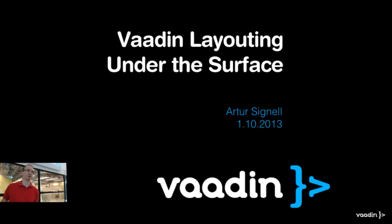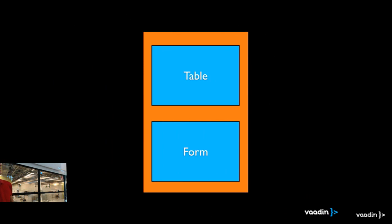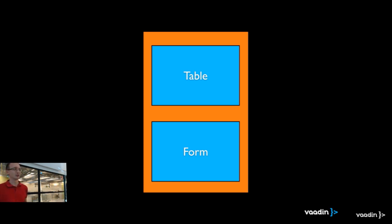Vaadin layouting under the surface. This is about what we can call a vertical layout with spacing and margins. It's a table form layout — basically a layout.